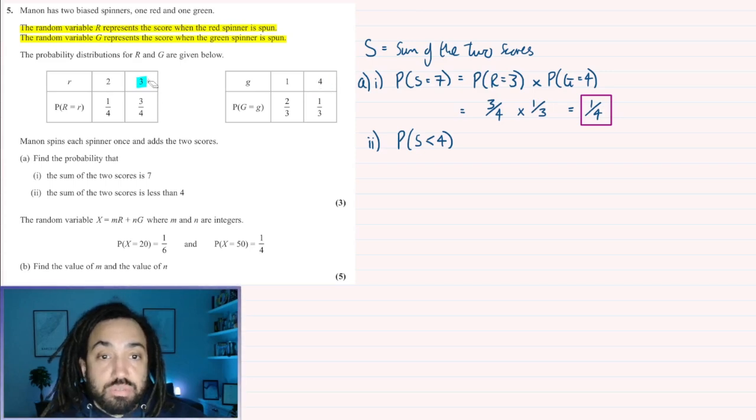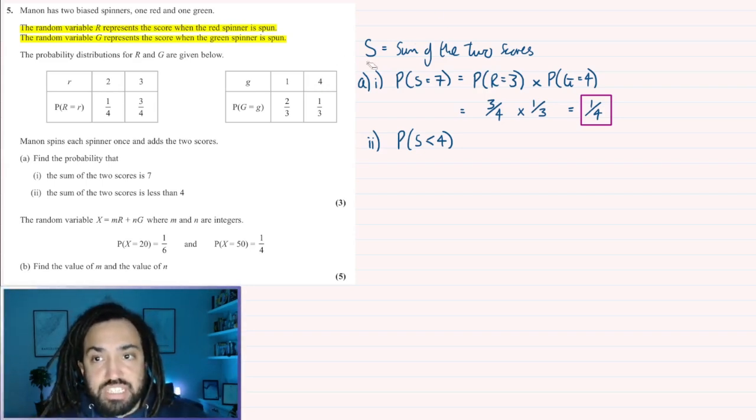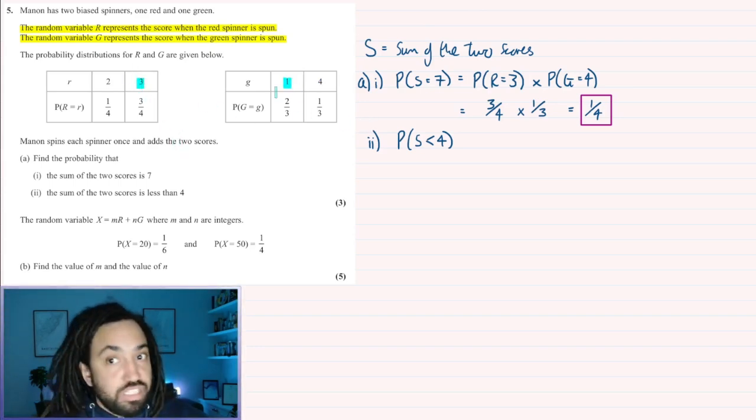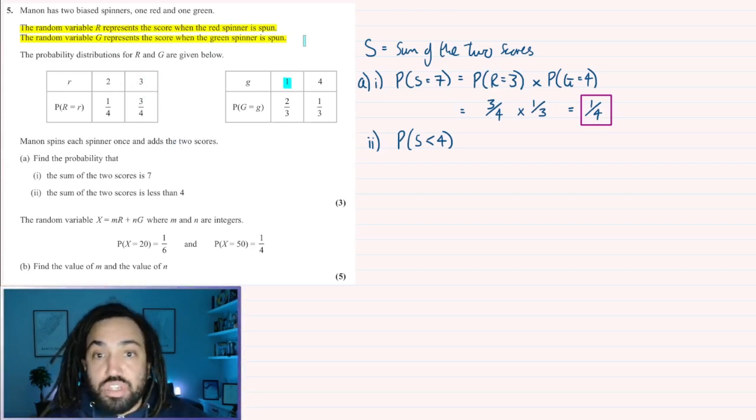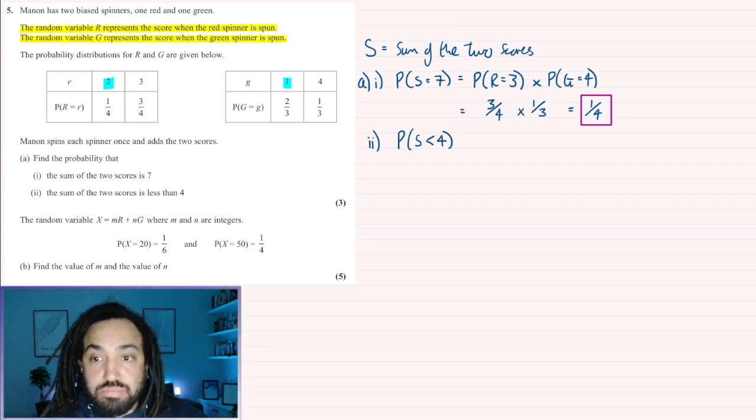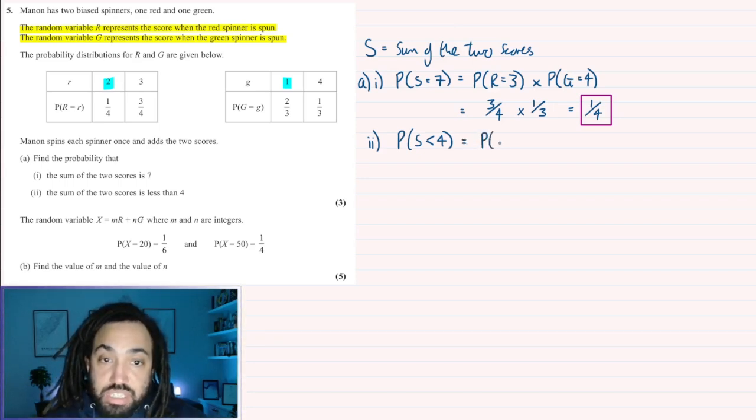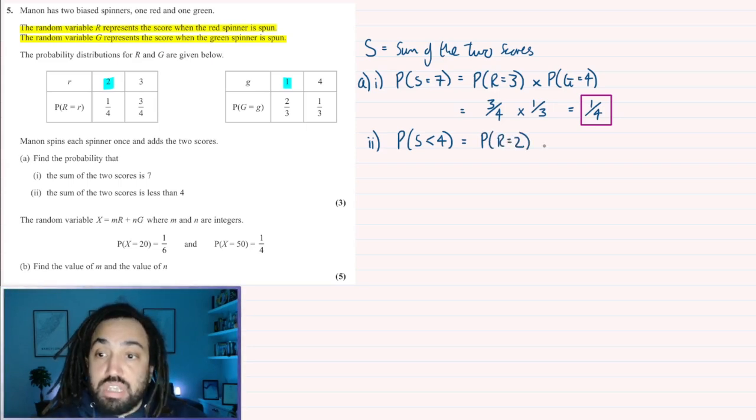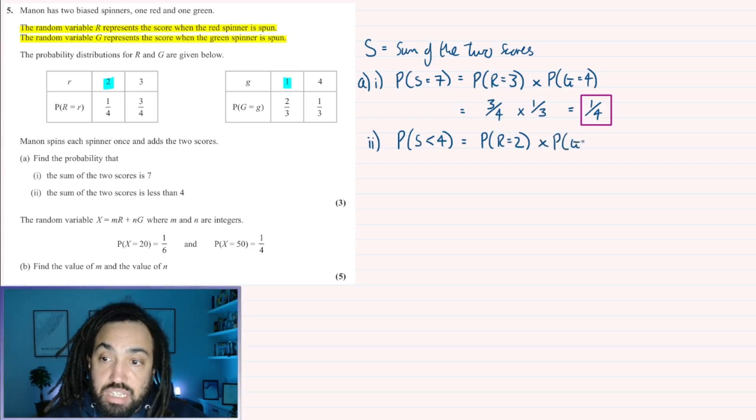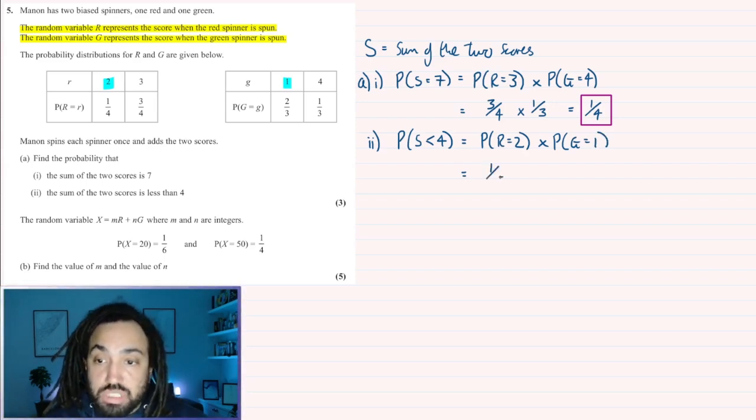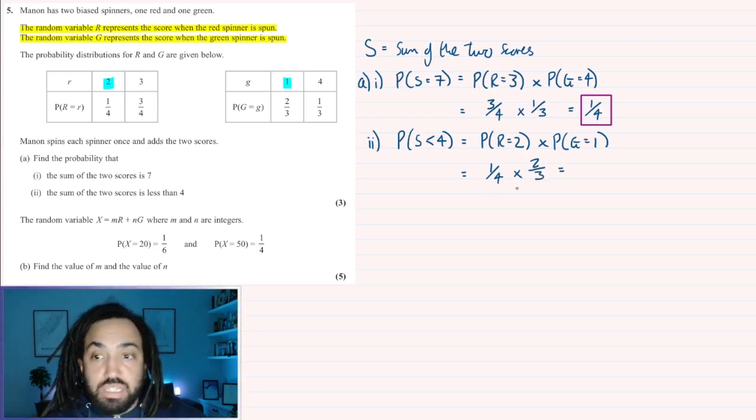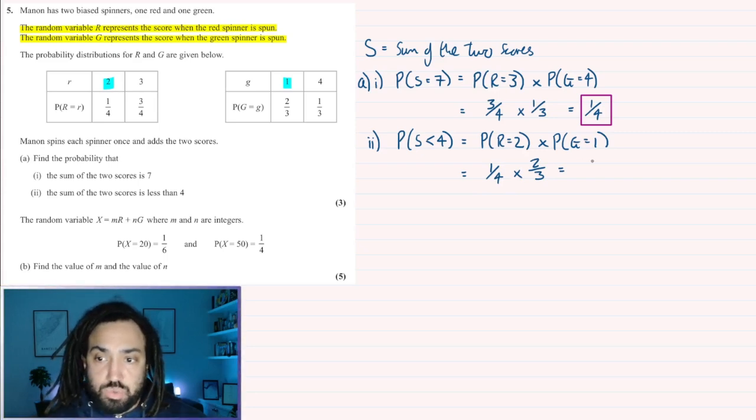How are we going to get less than 4? Well, obviously if the green is 4, then it's not less than 4. So the green definitely is going to have to be 1. And then if the red is 3, then that's not less than 4 because 3 plus 1 is 4. So the red is going to have to be 2. Less than 4 can only happen if the red is 2 and the green is 1. This is going to give us one quarter for red being 2 and two thirds for green being 1.